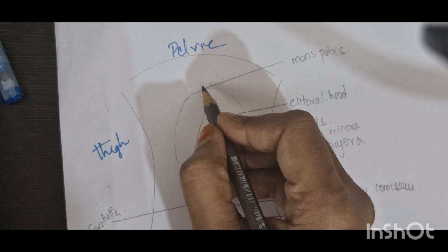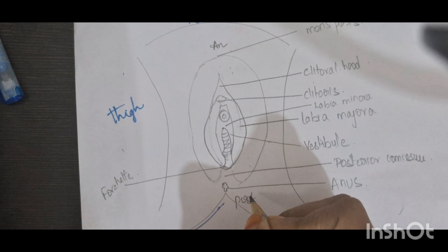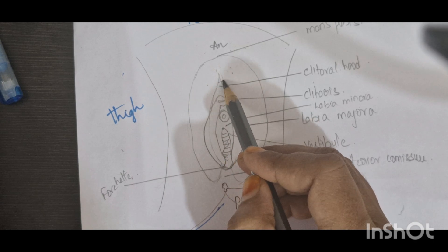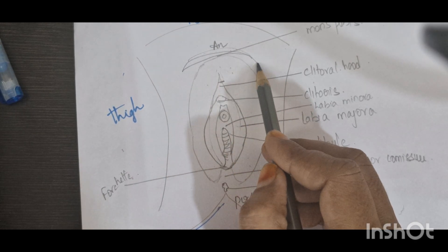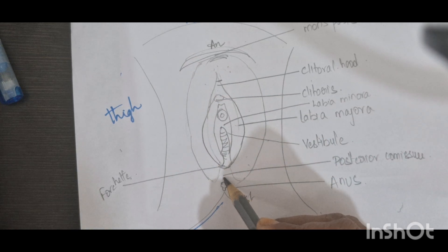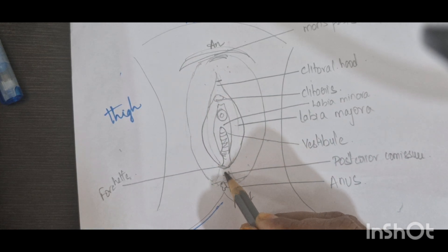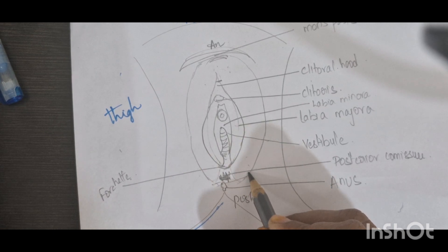Anteriorly, the labia majora fuse to form the symphysis pubis — that area is the symphysis pubic region. Posteriorly, they fuse at a region called the perineum. This is the labia majora.